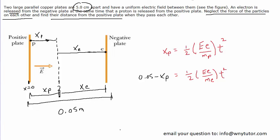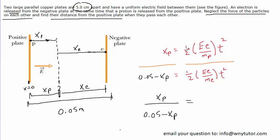One way to solve for x-p is to divide the two kinematics equations. Dividing the left-hand sides and right-hand sides gives: x-p divided by (0.05 minus x-p) on the left. On the right-hand side, the one-halves cancel, the time-squareds cancel, and the capital E times little e cancel. We're left with one over the mass of the proton divided by one over the mass of the electron, with a one in the numerator of each.